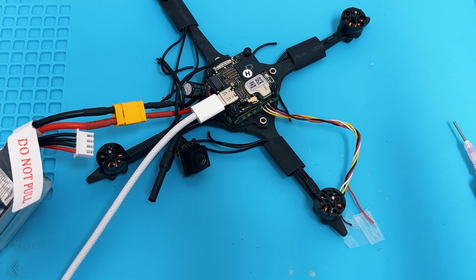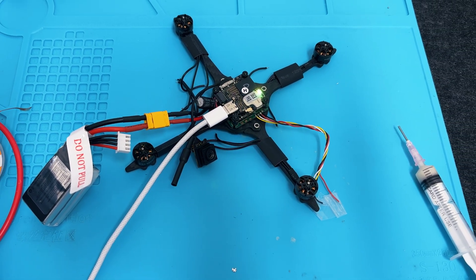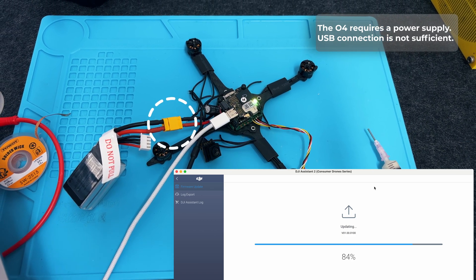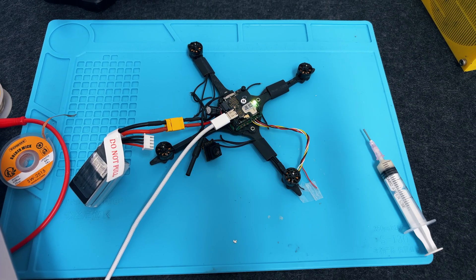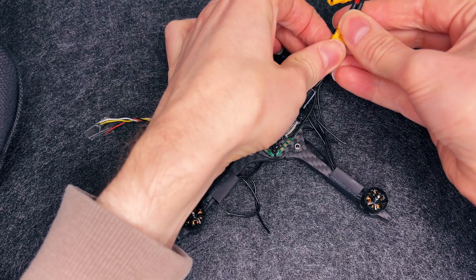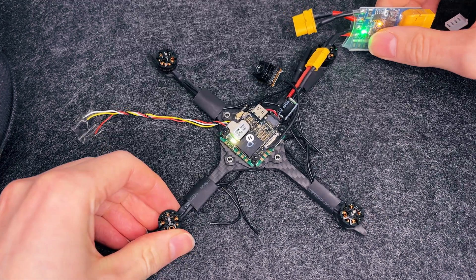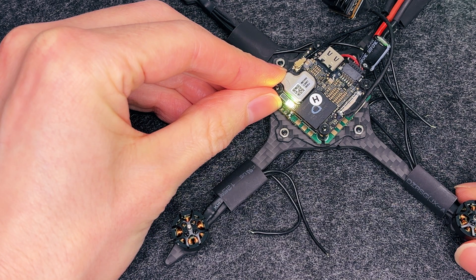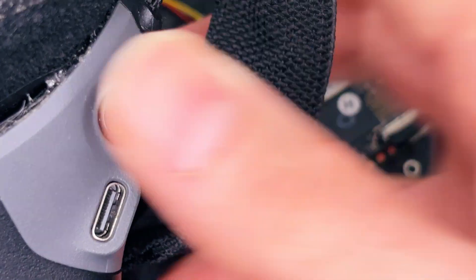Next up, firmware update and binding. First, connect the air unit to your PC and update the firmware using DJI Assistant. Then, if you haven't already, update your goggles as well. Otherwise, the O4 won't show up in the status menu. Once everything's up to date, put the air unit into binding mode by holding the bind button until the LED starts flashing red. Now, hold the power button on the goggles until you hear a series of short beeps.